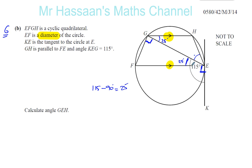I've actually found a way to get it directly now because I know that angle FGH plus angle FEH, they add up to 180 degrees because they are opposite angles in a cyclic quadrilateral. So I'll just put it in a different colour.